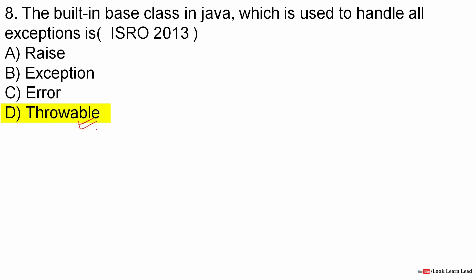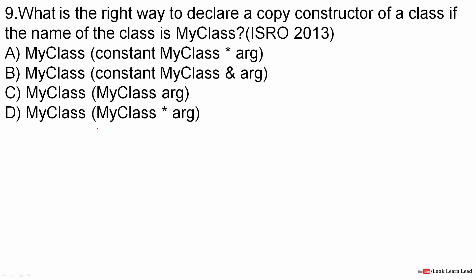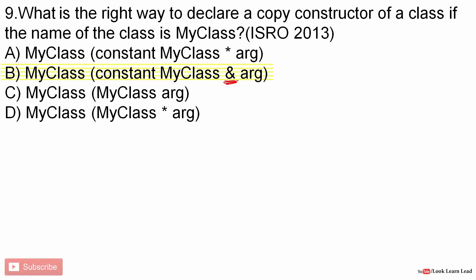Next question: what is the right way to declare a copy constructor of a class if the name of the class is MyClass? For a copy constructor, you must pass the address as an argument. The answer is B.